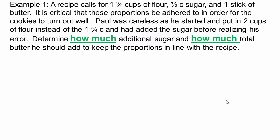So let's start with this problem. Recipe calls for one and three quarters cups of flour, half a cup of sugar, one stick of butter. It's critical that these proportions are met so that your cookies turn out well. Paul was careless as he started and put two cups of flour instead of one and three quarters cup and had added the sugar before realizing his error. Determine how much additional sugar and how much total butter he should use so that his cookies will turn out well. So what do you think we should do? I'm going to ask you to pause the video here and give this problem a try.